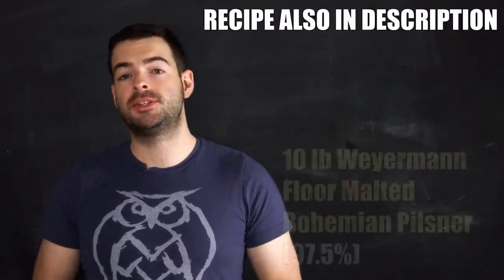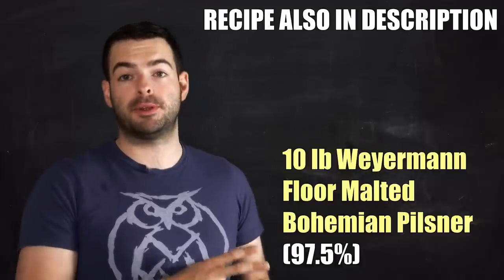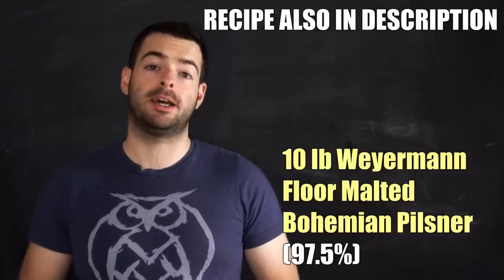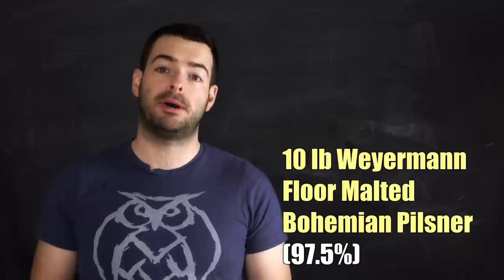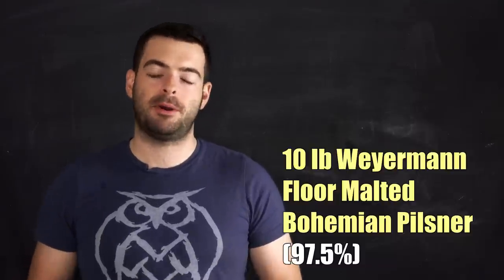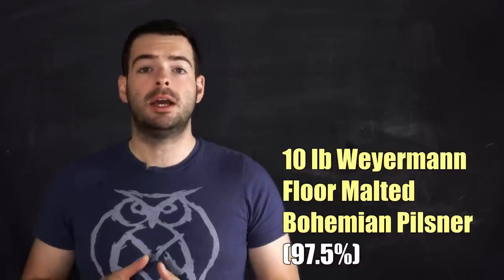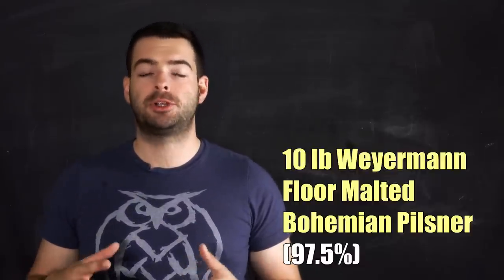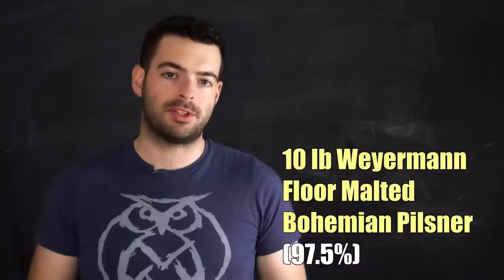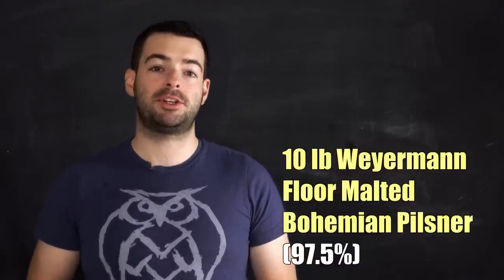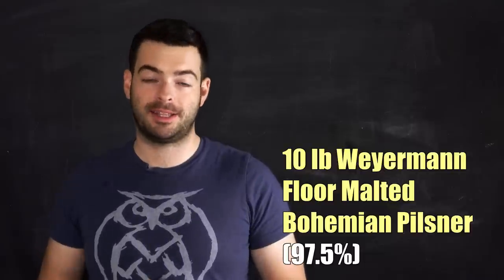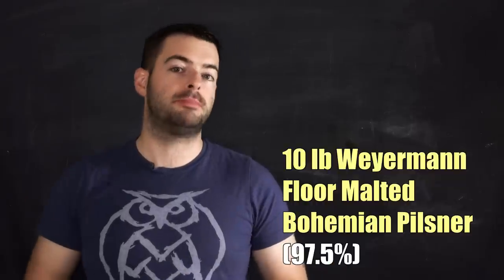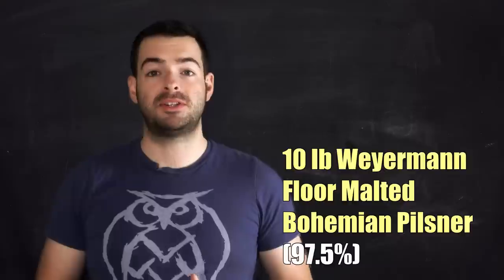So we're going to be starting off with a very special malt here. This is Weyermann floor-malted Bohemian Pilsner malt. What that means, essentially, is that this malt has been malted in the traditional way, not the more modern ways, which results in it being slightly under-modified. What that means, basically, is there's less diastatic power, there's less enzyme capability in this malt to convert itself and other malts. And what that means is we have to do a little bit extra work during the mash to actually make it unlock the full potential of its starches. Something like a decoction mash or a step mash is what you do with an under-modified malt to make something like that work. It also has the side benefit of having a more complex flavor than traditional, regularly malted Pilsner malt.